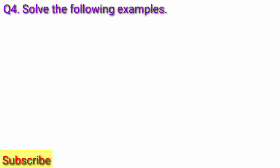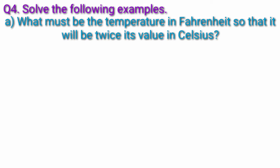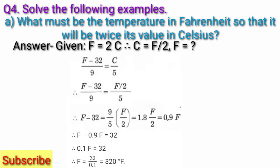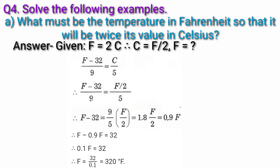Question 4A: What must be the temperature in Fahrenheit so that it will be twice its value in Celsius? Given: F = 2C, therefore C = F/2. Using the formula: (F − 32) / 9 = C / 5. Substituting: (F − 32) / 9 = (F/2) / 5. Therefore, F − 32 = (9/5) × (F/2) = 0.9F.